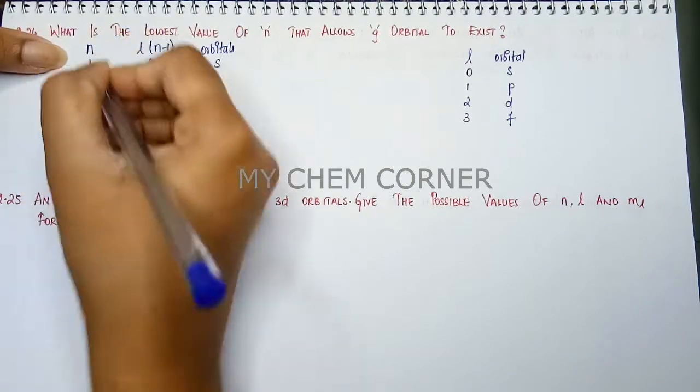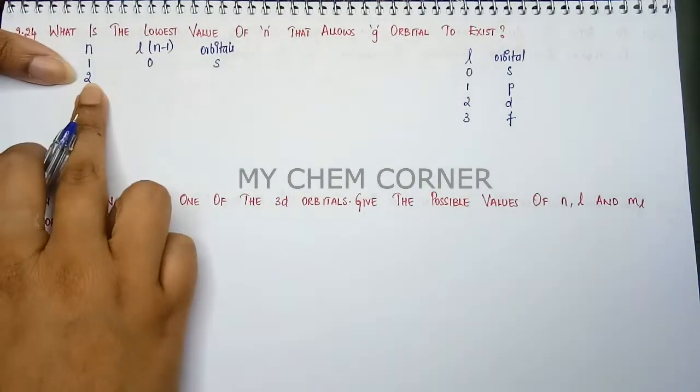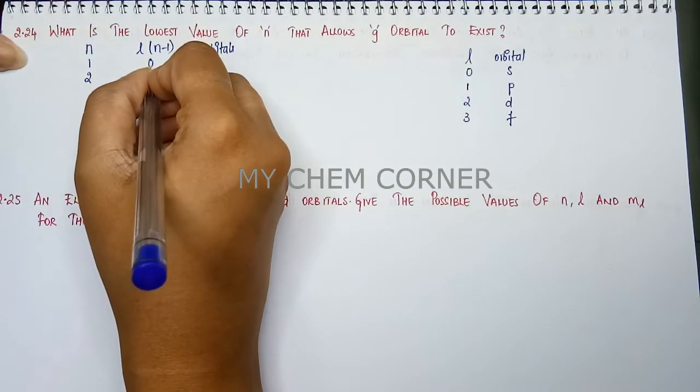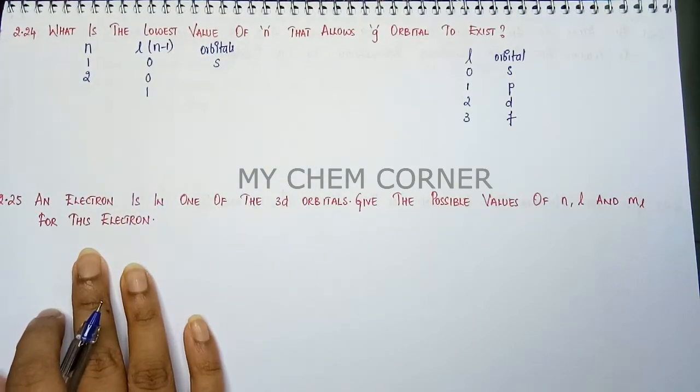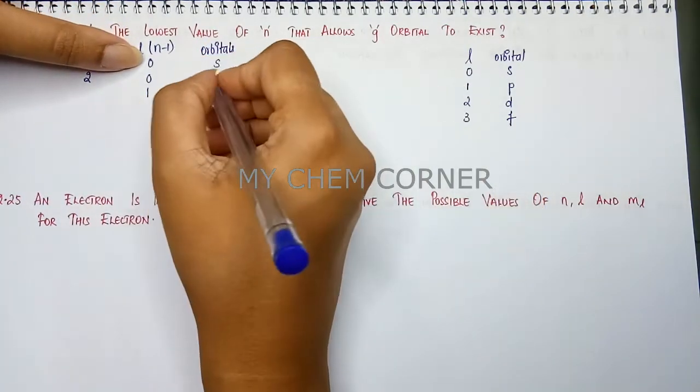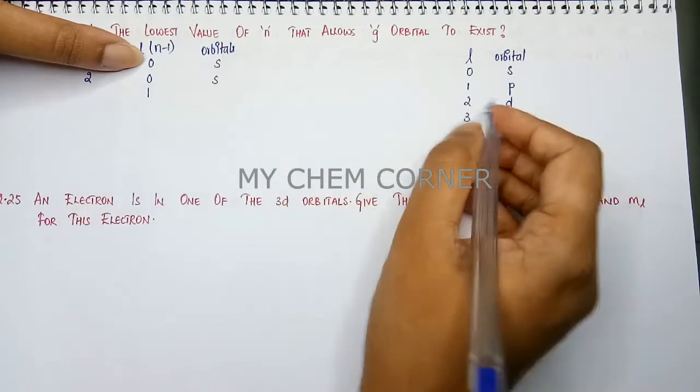Next as we move to principal quantum number 2. For this you get two values and n minus 1 you get 1, of course 0, the other one is 1. So when you get for this you will get for l equals 0 you get s orbital. For l equals 1 you get p orbital.